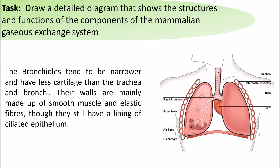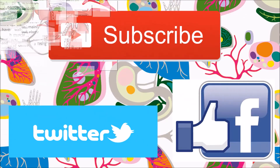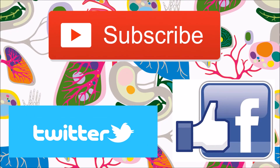The bronchioles tend to be narrower and have less cartilage than the trachea and bronchi. Their walls are mainly made up of smooth muscle and elastic fibers, though they may still have a lining of ciliated epithelium. Hopefully this video should have helped you complete your daily revision task.